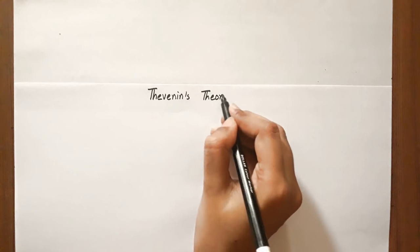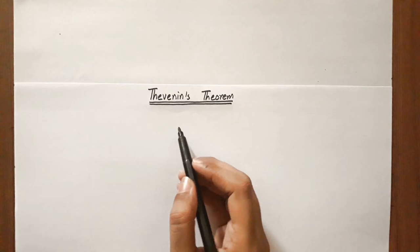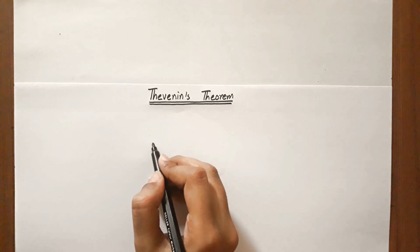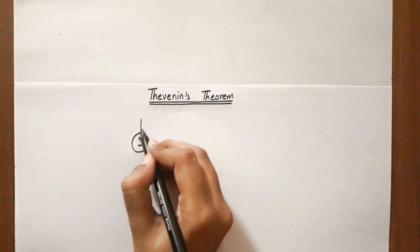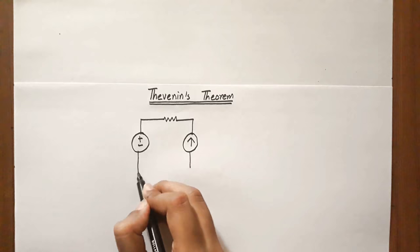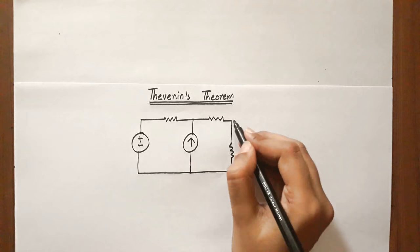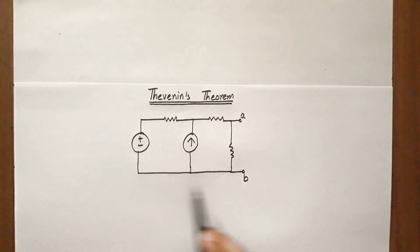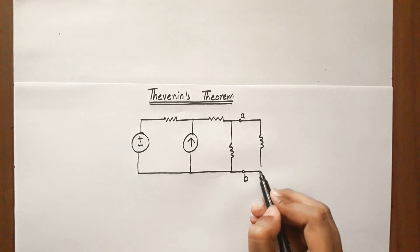Thevenin's theorem states that we can replace a linear two-terminal circuit by finding the voltage source V_thevenin in series with resistance R_thevenin. Let's run through Thevenin's theorem. We have terminals A and B, and the entire circuit is connected with a load resistance R_L connected to this circuit.